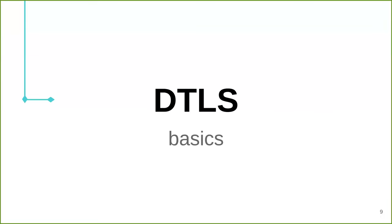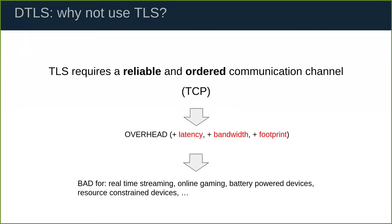Let's start from the basics. Why do we need DTLS in the first place? Why can't we just use TLS? The TLS protocol requires a reliable and ordered communication channel — meaning every message that is sent must be received on the other end, and the order of messages must be preserved.